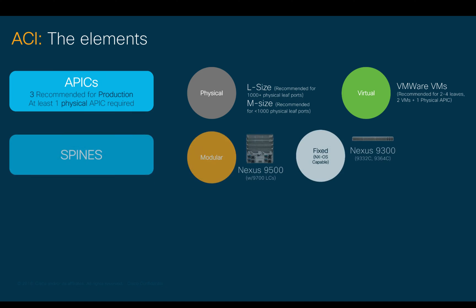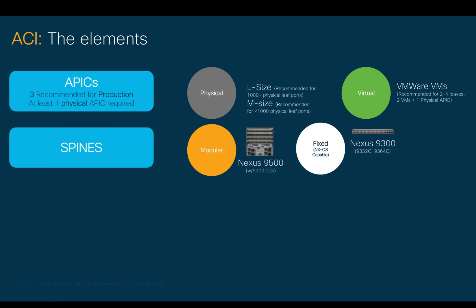Then, the spines. Think of them as your distributed backplane for your ACI network. This will allow us to communicate leaf switches between each other. The more leaves you have in your network, the more ports you will need at the spine layer, so make sure you choose the right fixed or modular model based on your leaf needs.